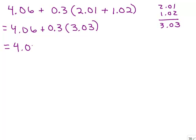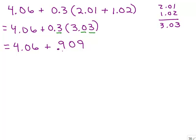So I need to keep writing the 4.06 plus, and now I need to multiply these two numbers together, which is 3 times 303. That's 909. Then you have to decide where to put the decimal point: one digit here and two digits there, so three places total, giving 0.909. Now we can add these two together — line up the decimal points — and that gives you 4.969.